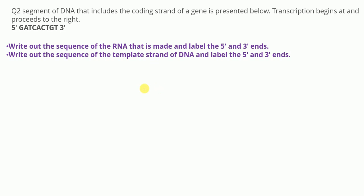Moving to the next problem: a segment of DNA including the coding strand of a gene is given. Transcription begins at one end and proceeds to the right. We have to write down the sequence of the RNA and the sequence of the template strand of the DNA, labeling the 5 prime and 3 prime ends. Before solving, let me explain the concept of coding strand versus template strand.